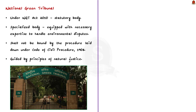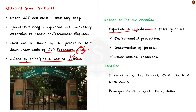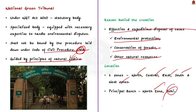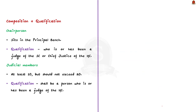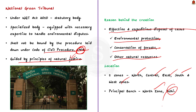The NGT shall not be bound by the Code of Civil Procedure 1908 but shall be guided by principles of natural justice. It was established for effective and expeditious disposal of cases related to environmental protection, conservation of forests, and other natural resources. The NGT has presence in five zones: North, Central, East, South, and West. The Principal Bench is in the North Zone, headquartered in Delhi. Other benches are in Bhopal (Central), Kolkata (East), Chennai (South), and Pune (West).